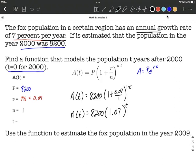Finally, what we're going to do is use this function to estimate the fox population in the year 2009. So 2009 minus the year 2000 is going to be 9, and that's going to be a value for our time t.